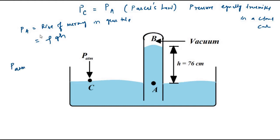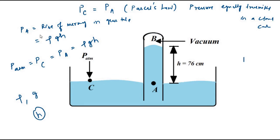This means that atmospheric pressure, which equals P_C, which equals P_A as per Pascal's law, equals rho*g*h. Out of this, rho is constant and g is constant — the only variable is h. So the height of mercury, which can go up or down, gives us the pressure value to be measured.